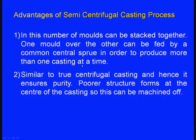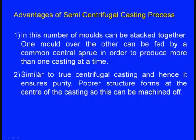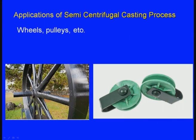An advantage of semi-centrifugal casting is that multiple moulds can be stacked and fed by a common central sprue to produce more than one casting at a time. Similar to true centrifugal casting, it ensures purity, and any poorer structure or impurities collect at the centre where they can be machined off. Applications include wheels and pulleys.